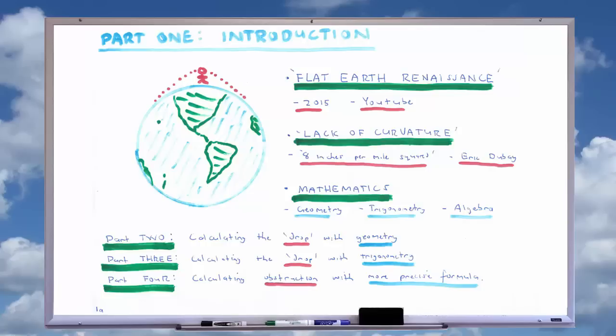In part two of this series, I will show how geometry can be used to calculate the drop from the tangent line intersecting the Earth at point A to the dropped Earth at point B.